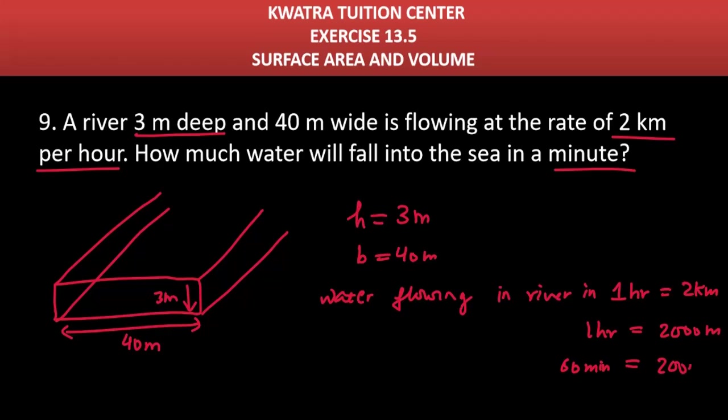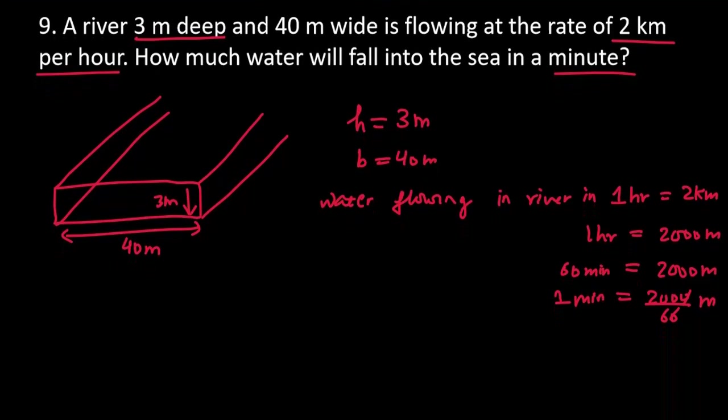Because in one hour, how much water can flow? 60 minutes. Let's write 60. Let's write 60. 2,000 divided by 60. 0 to 0 cancel. What have you left? 200 over 6.